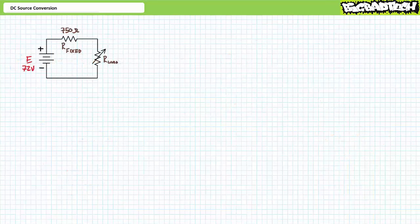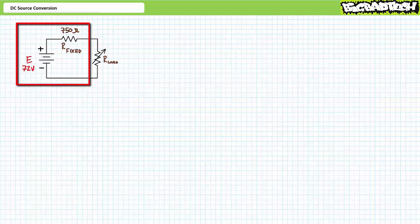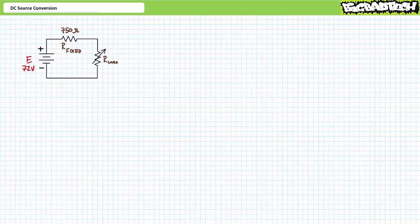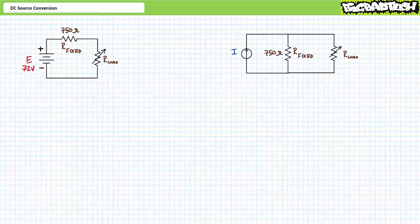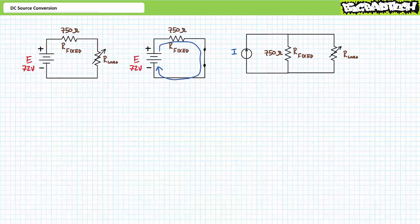Let's try the reverse operation and learn to convert a DC voltage source in series with a fixed resistance to an equivalent DC current source in parallel with a fixed resistance. Consider a 72 volt source in series with a 750 ohm fixed resistor in series with a variable load resistor. We need to solve for two properties: the current magnitude and the resistance value of the alternate source configuration. The value of the equivalent fixed parallel resistance is the exact same value of the fixed series resistance — only the position changes. To determine the value of the equivalent current source, one must remove the variable load resistor and place a low resistance short circuit across the terminals of interest. With a short circuit placed across the load terminals, the source sees only the series resistance of the fixed resistor. An application of Ohm's law demonstrates that this is a value of 96 milliamperes. Our equivalent source configuration is therefore a 96 milliampere current source in parallel with the fixed resistance of 750 ohms.